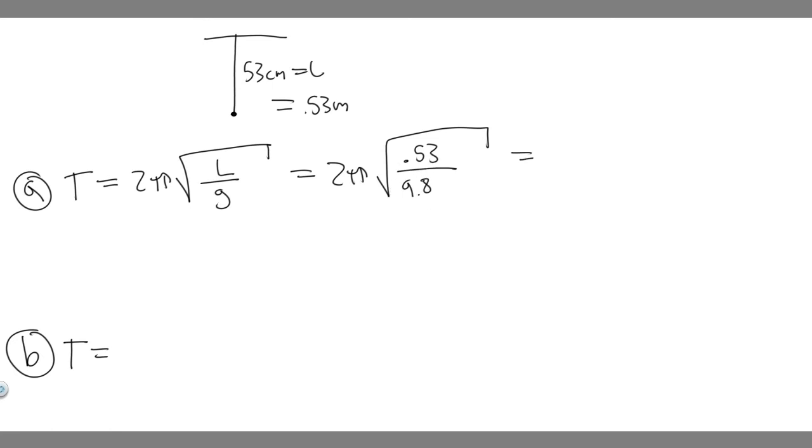And so if you plug this in, 2 times π, multiply that by the square root of 0.53 divided by 9.8. When you go ahead and do this, you're going to get 1.461 and so on.